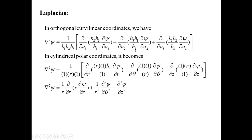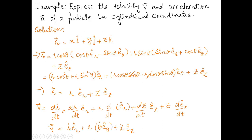The next example is to express the velocity V and acceleration A of a particle in cylindrical polar coordinates. Velocity is dr/dt and acceleration is d²r/dt² or dV/dt. We start with the position vector R = xi + yj + zk and convert it to cylindrical polar coordinates.